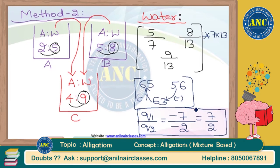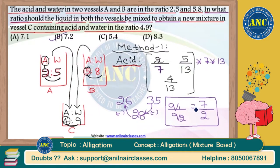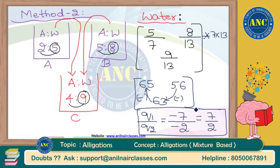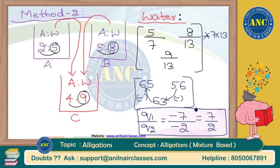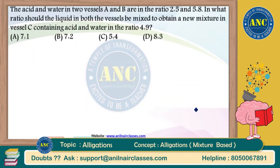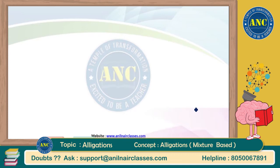Whether you take acid as the base reference like in method 1, or water as the base reference like in method 2, if you have made no calculation mistakes, you will definitely get the same answer: 7:2. The answer for this variety of allegation question is 7:2.